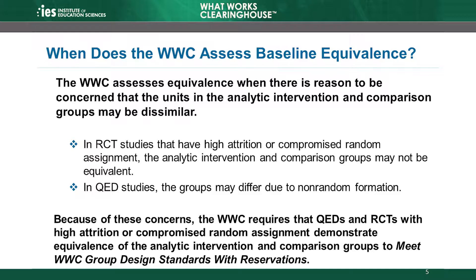The WWC assesses equivalence when there is reason to be concerned that the units in the analytic intervention and comparison groups may be dissimilar. Normally, random assignment gives us confidence that the groups are similar, or equivalent, on observable and unobservable characteristics. But if the RCT has high attrition or compromised random assignment, the intervention and comparison groups used in the analysis may not be equivalent. For QEDs, the groups may differ because the study did not form them randomly.